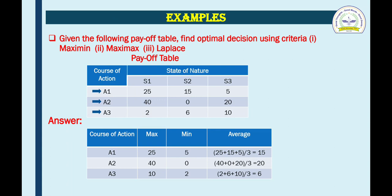Similarly, we also write the minimum values. For action A1, the minimum value among 25, 15, and 5 is 5. For action A2, the minimum value among 40, 0, and 20 is 0. For action A3, the minimum value among 2, 6, and 10 is 2.